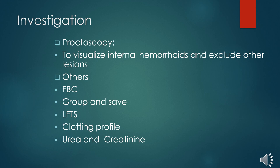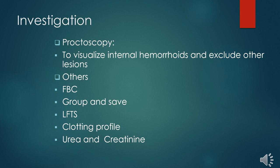You can also collect blood for grouping, cross-match, and save if the patient is severely anemic, as they may need a blood transfusion. Also look at the clotting profile — bleeding time, clotting time, and prothrombin time — to check for any coagulopathy that could precipitate per-rectal bleeding. Urea, creatinine, and liver function tests can also be done to rule out other causes and complications.